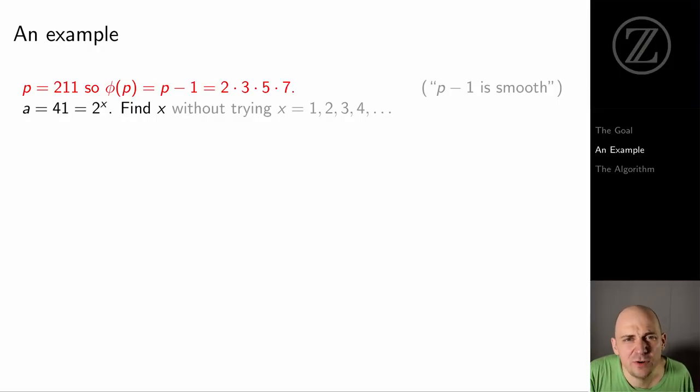So we've got this prime number p equals 211. And in this case, the Euler phi function of p is p minus 1, which is 2 times 3 times 5 times 7. Now, p minus 1 is said to be a smooth number because none of its prime factors are particularly large. There's no official definition of what particularly large means, but I'm emphasizing the fact that none of the prime factors of p minus 1 are very large. The problem that I gave myself is to find an x so that 2 to the x is equal to 41 modulo 211. I don't want to just try all the possible x's. I'd like there to be some kind of shortcut for finding an x in this case.